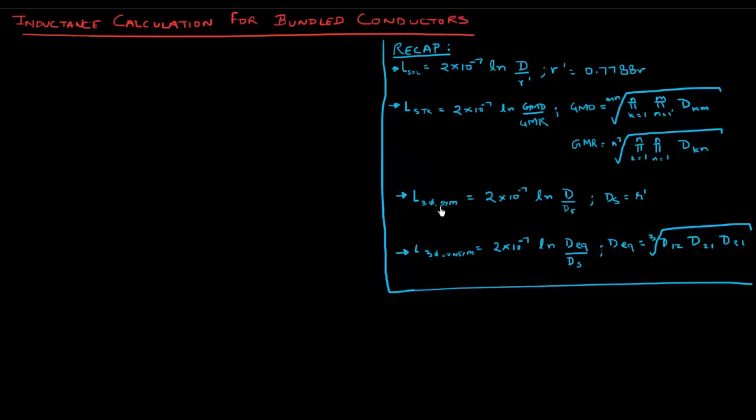We then moved on to three-phase systems and we saw the equation for a configuration of an equilateral triangle where all the three phases were in an equilateral triangle configuration, and this is the formulation we got for that. We substituted this r' with the constant ds.